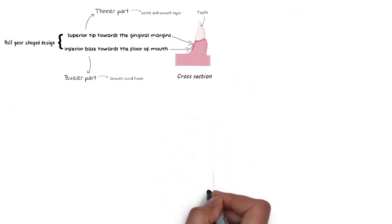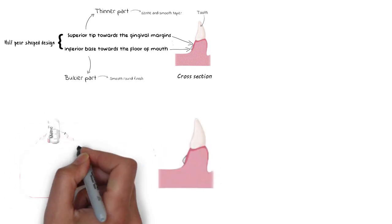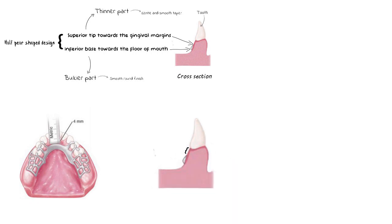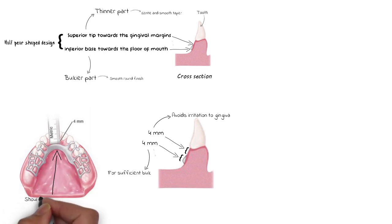For the lingual bar to be least irritating to the gingival margins, it must be located at least 4 mm below the gingival margins to avoid any interference or impingement on the gingiva. Placing the lingual bar as inferiorly as possible also avoids interference with the resting position of the tongue and trapping of food. The lingual bar must also have adequate bulk, requiring at least 4 mm of vertical height.